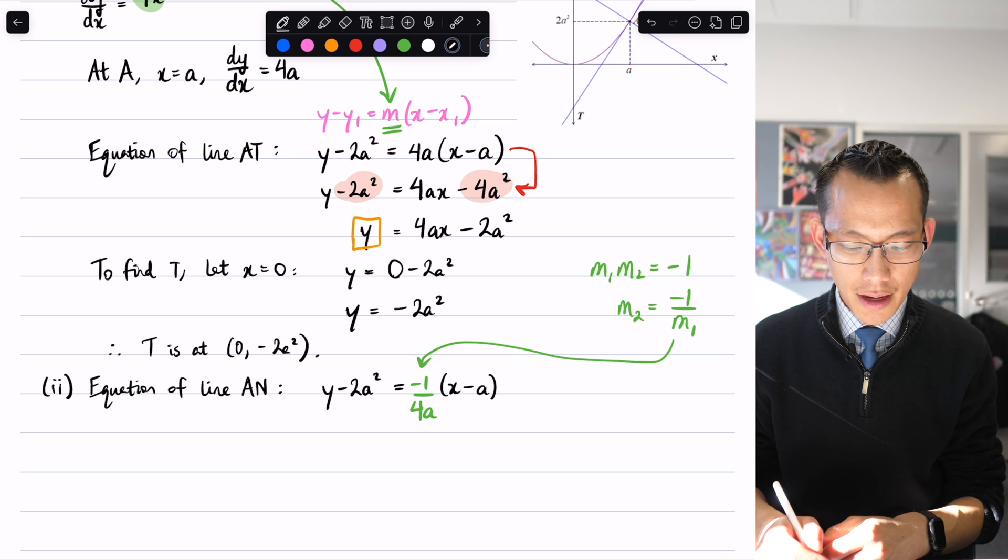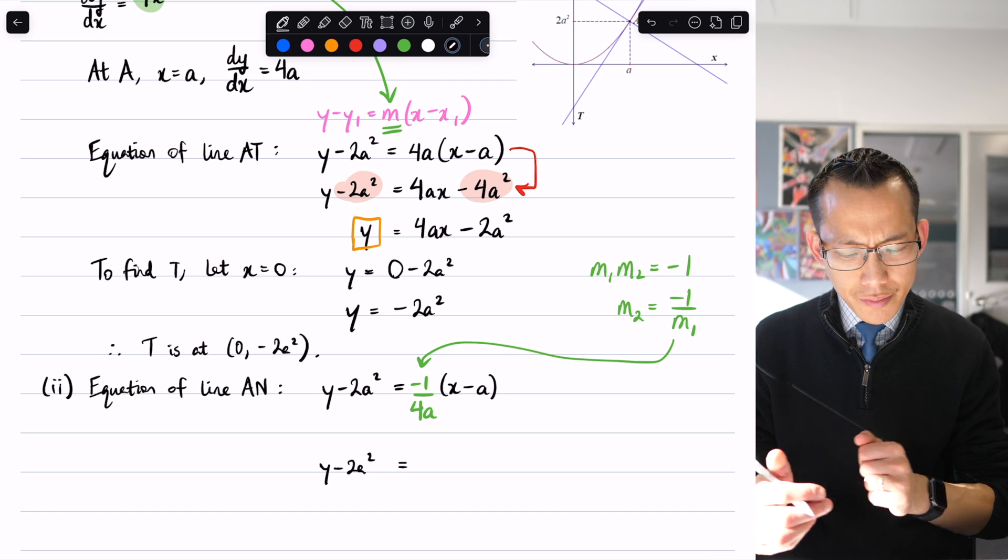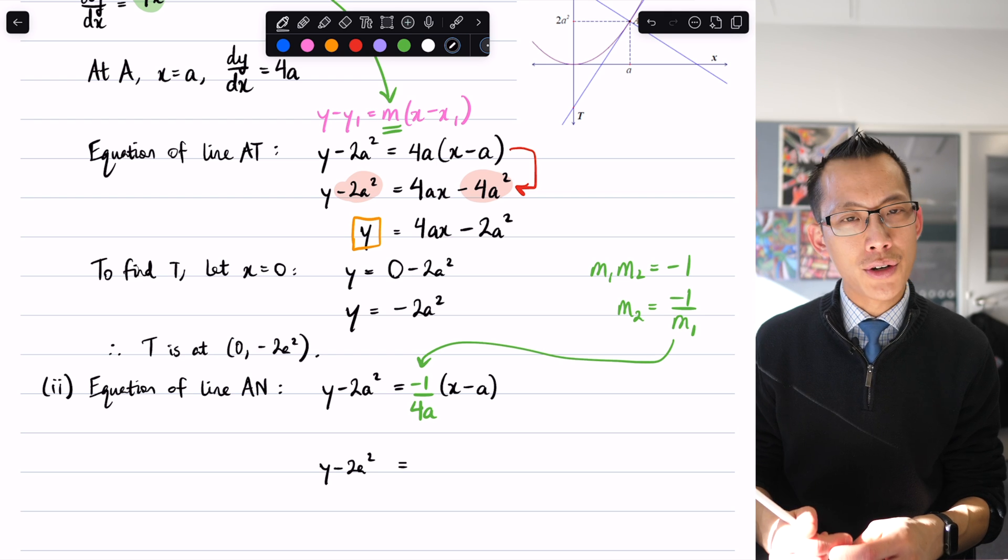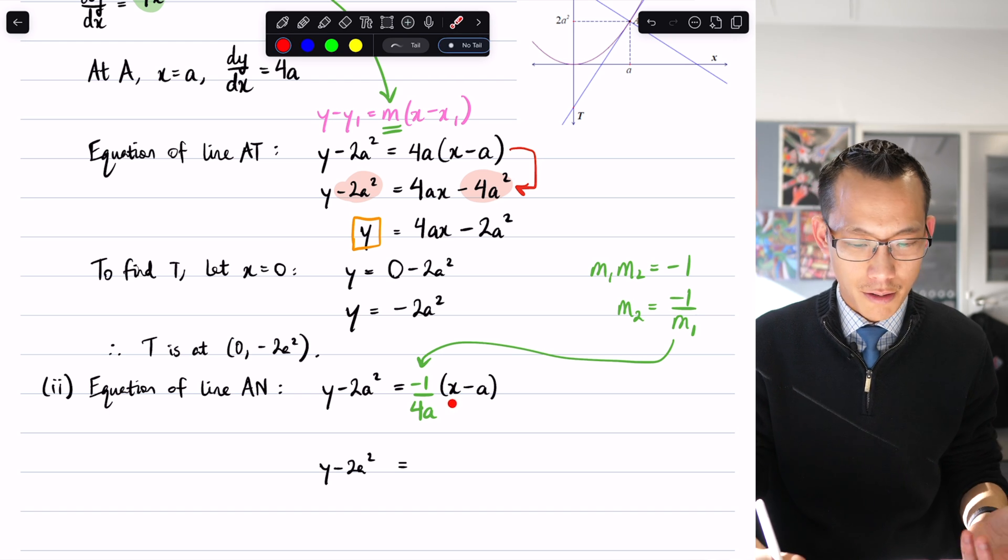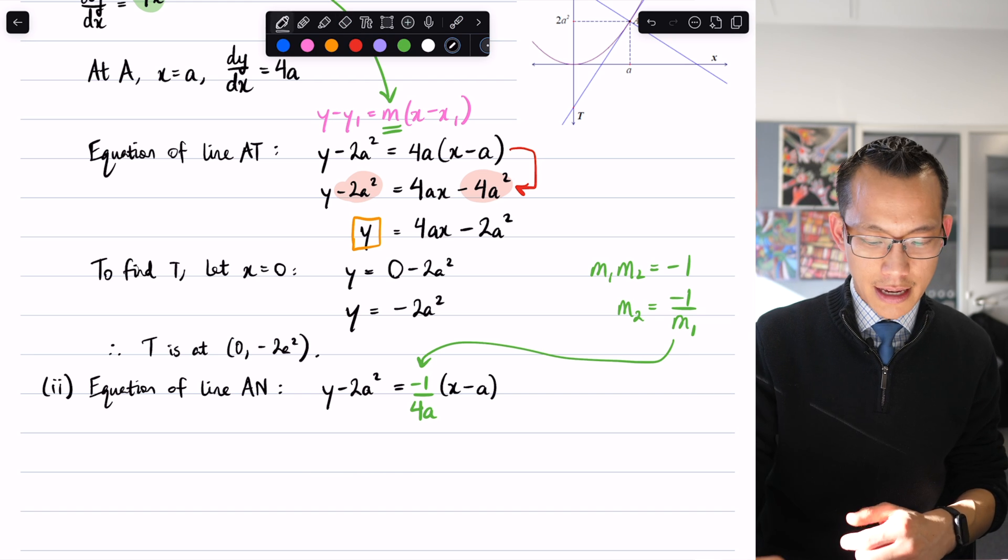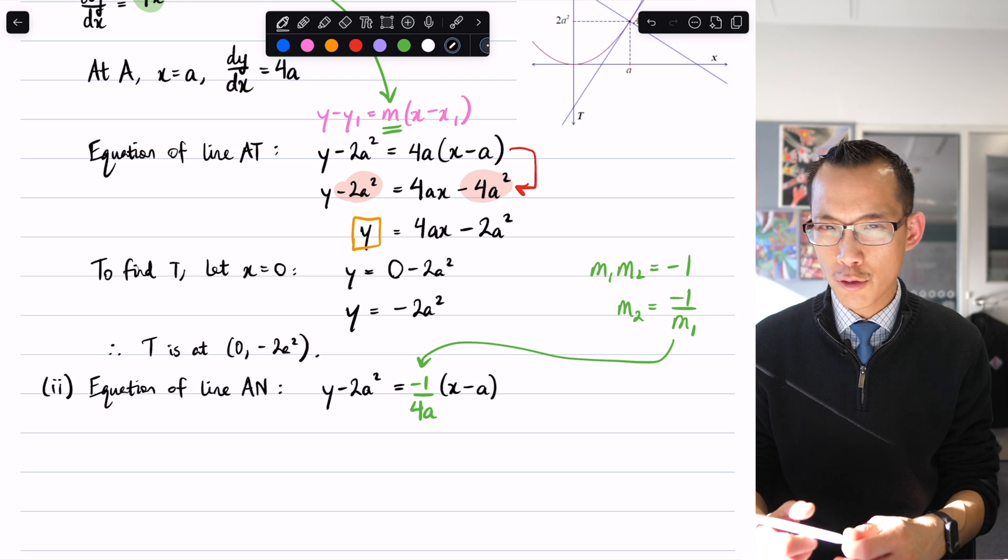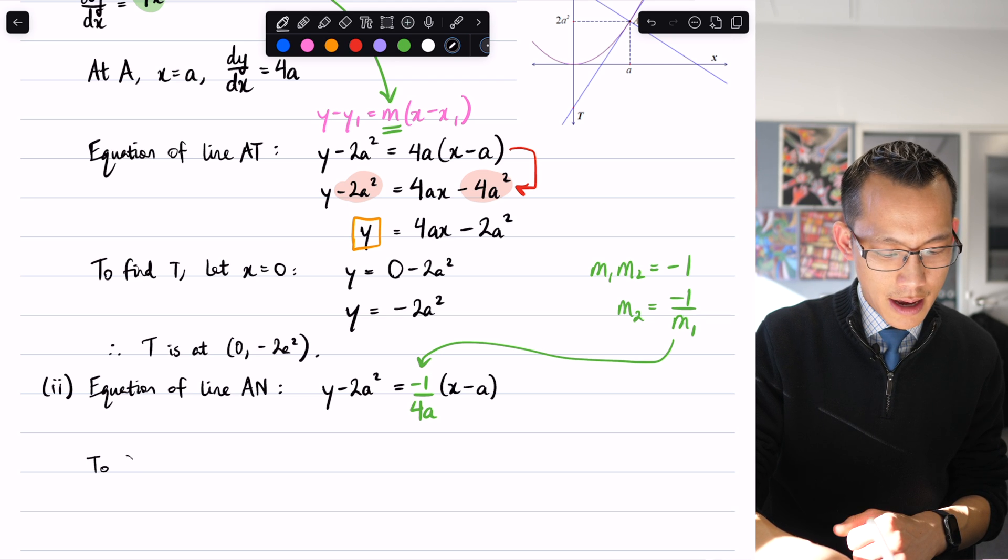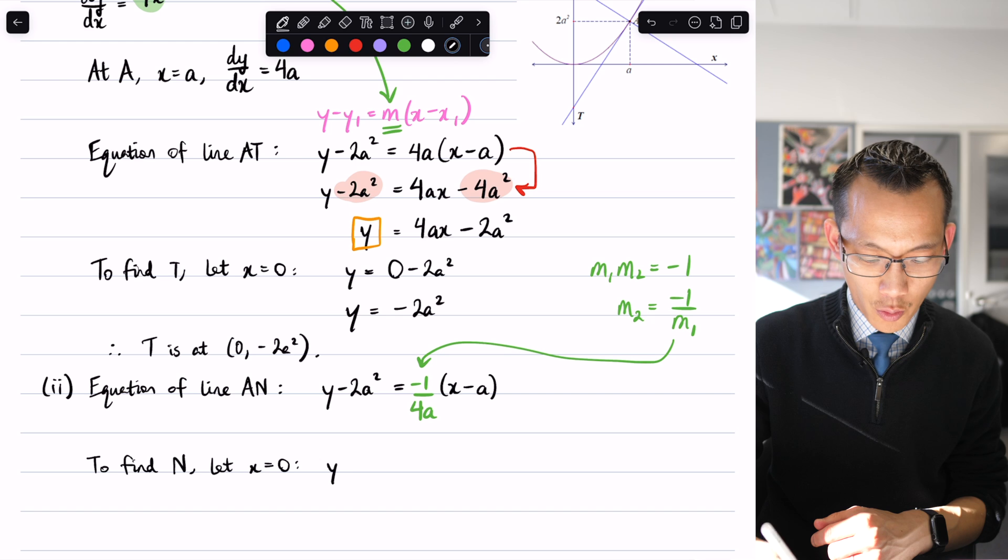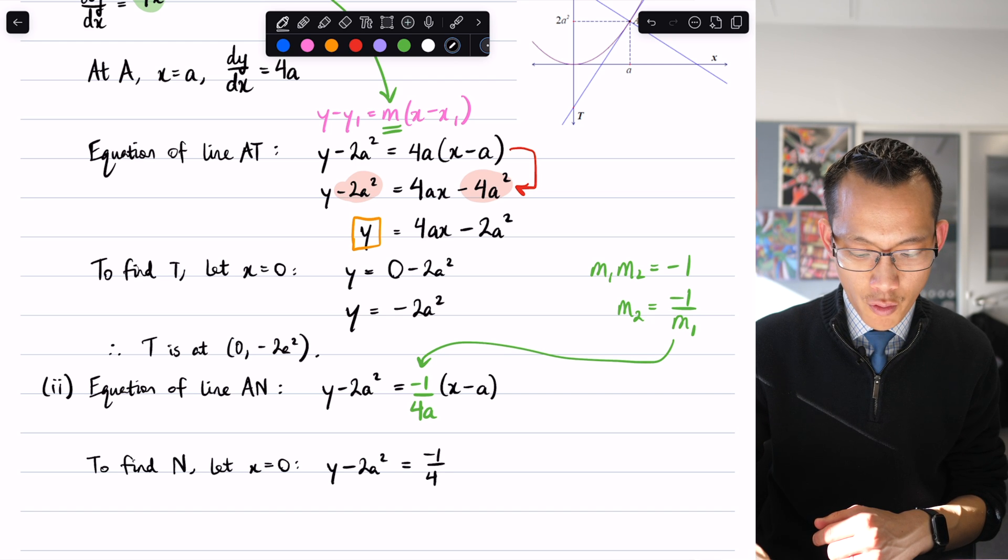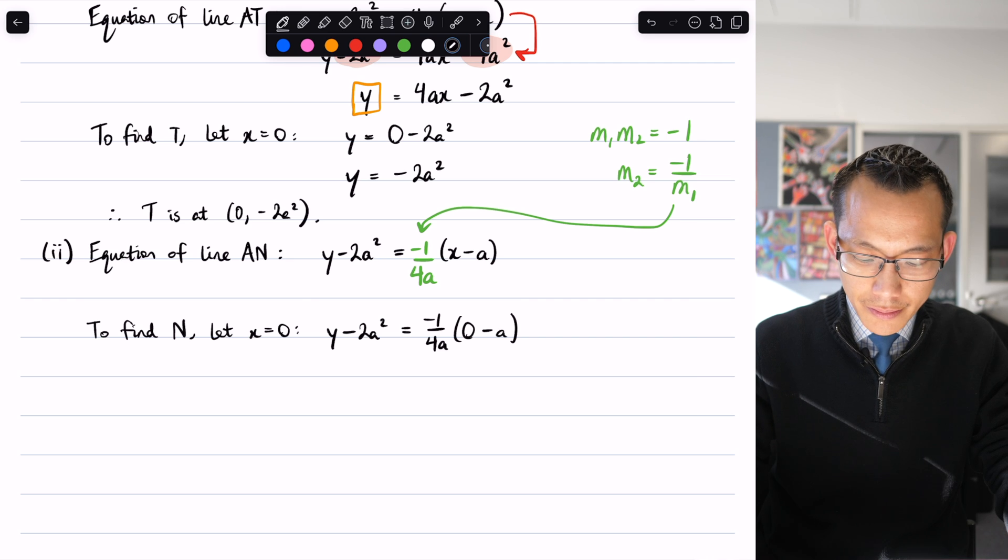Now I just need to expand out and see what happens. Remember, just like we saw before, what I'm looking for is to let x equal 0. So I might not even expand just yet because I'm going to use this x term here, but I don't need to worry about that x term—it's going to be 0 in a minute. So I'm just going to say, even though this is super messy in unsimplified point-gradient form, to find N let x equal 0. I can go y minus 2a squared equals negative 1 over 4a, this becomes 0 take away a.